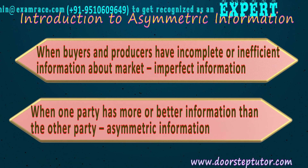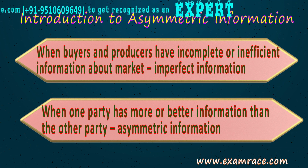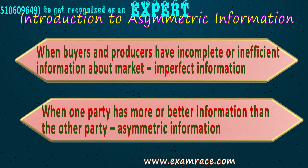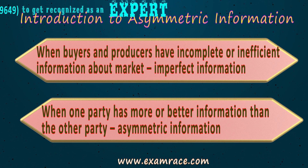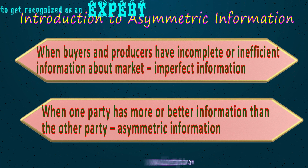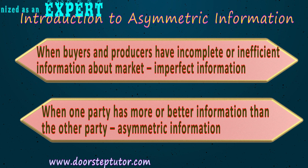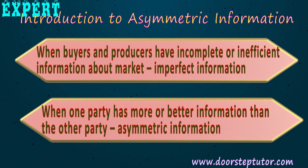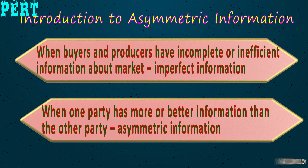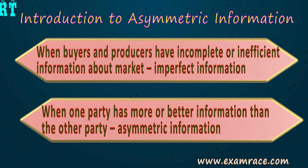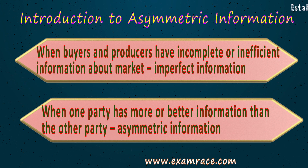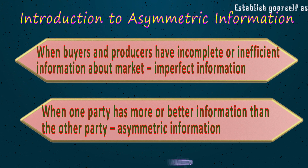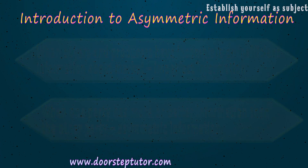However, when one economic participant or party has better information than the other participant involved in the transaction about the probability of an outcome, it is known as asymmetric information.